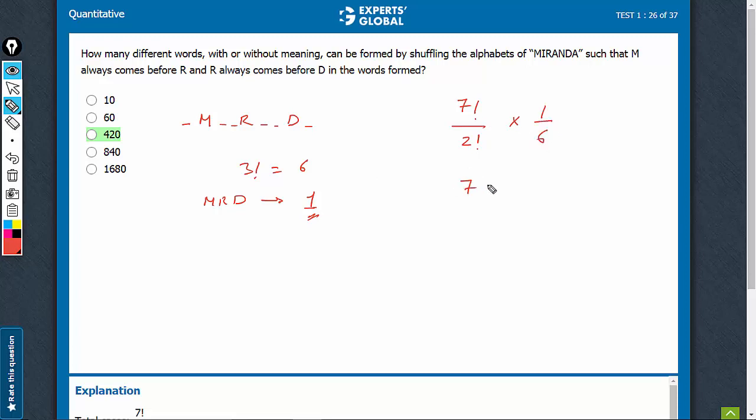7 factorial would be 7 × 6 × factorial 5 is 120 upon 2 × 6. Turns out, this is 10, 42 × 10, 420.